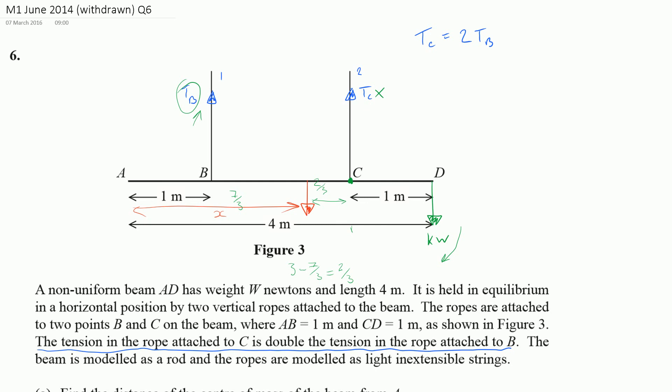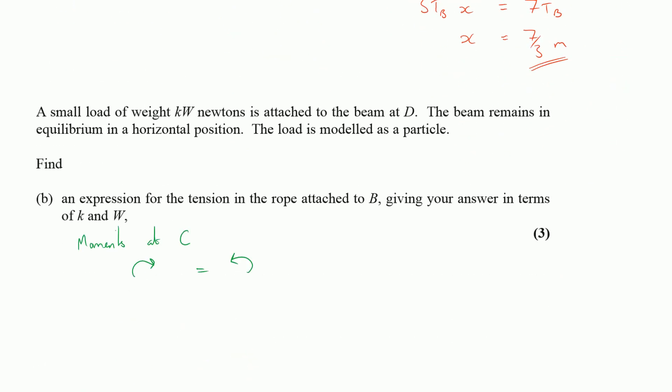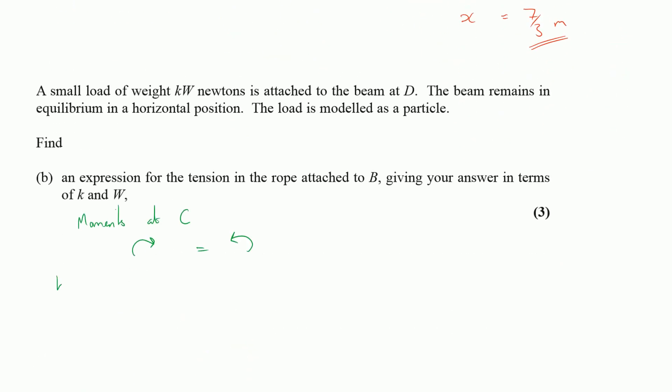So my anticlockwise moments were KW times by 1, and TB times by 2, tension at B times by 2. And my anticlockwise moments, well that was just the original weight of the rod multiplied by its distance, which was 2 thirds.